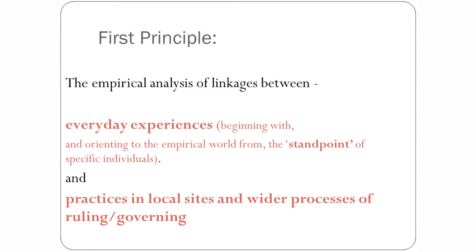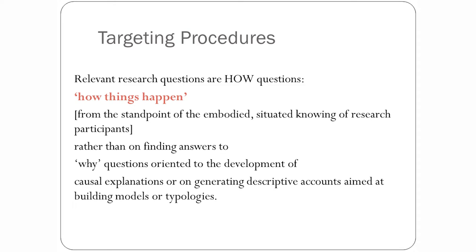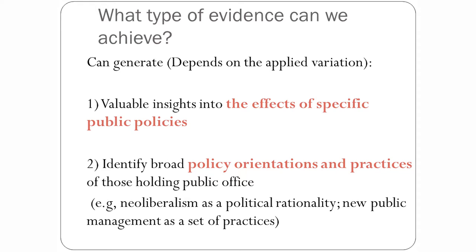Creating the linkage would be the first principle of Institutional Ethnography. The kind of questions we raise when doing IE are how questions rather than why questions. We are not into explaining or presenting causal arguments, but rather understanding procedures — understanding exactly what a woman would encounter when she enters the institutional space around her. The type of evidence we can achieve through Institutional Ethnography would be primarily the effects of social policy — the strong linkage between what happens to us in daily life and the level of social policy.